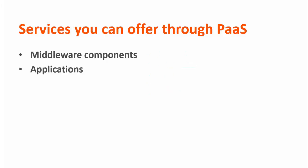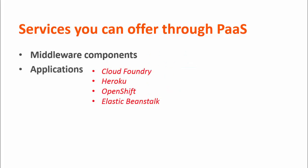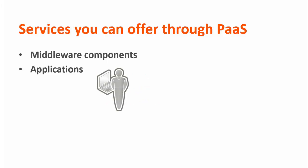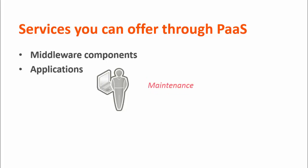Applications. For example, you can offer Cloud Foundry, Heroku, OpenShift, and Amazon's Elastic Beanstalk application PaaS services so that developers can use these PaaS platforms to build, deploy, and run their application code without worrying about infrastructure deployment, maintenance, and support.